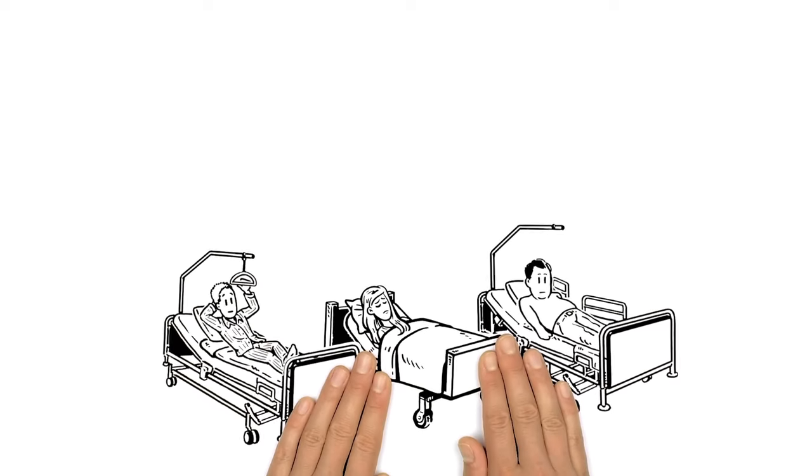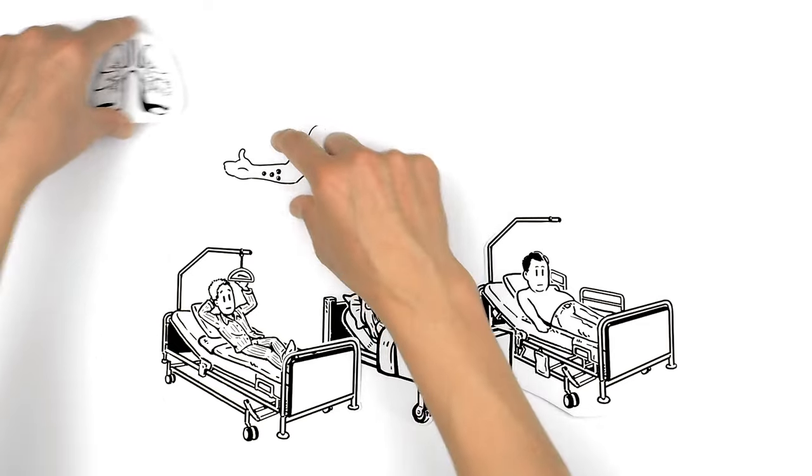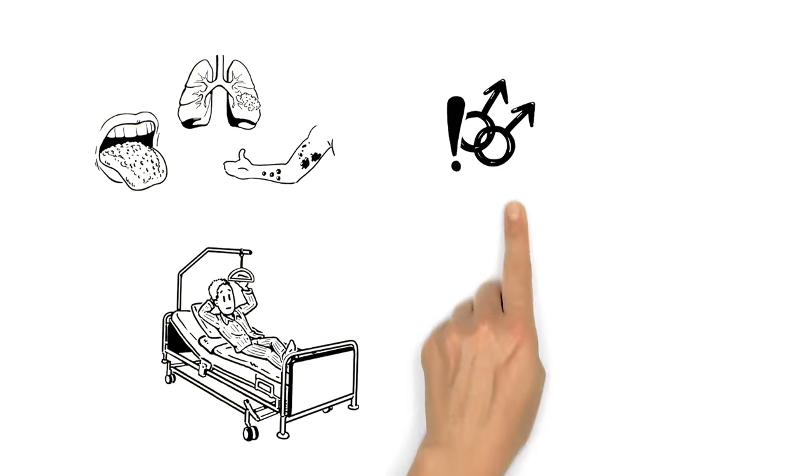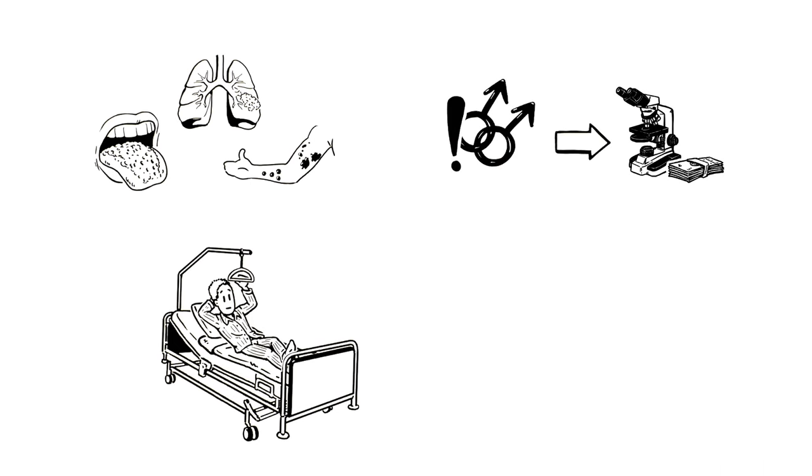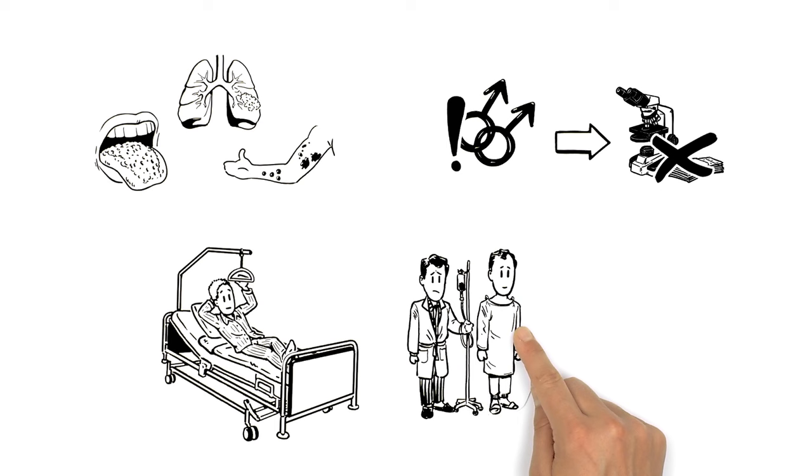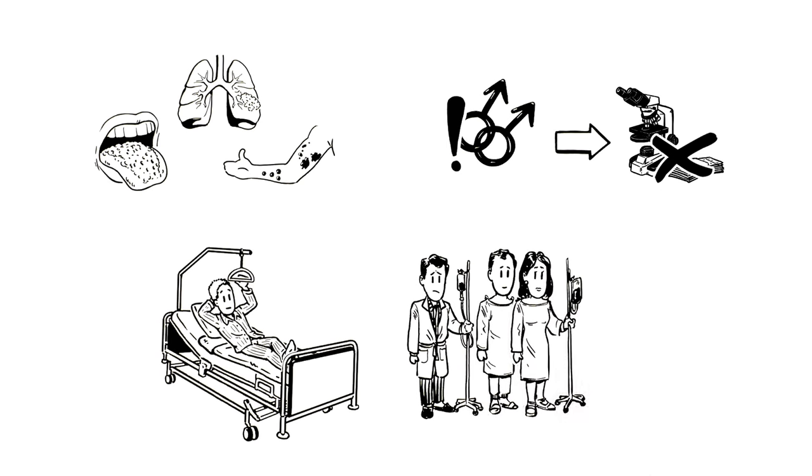The patients suffered from rare forms of skin cancer, pneumonia or thrush, and few survived. Prejudice against homosexuality made research funding hard to get, and more and more people were getting sick. What could be done?